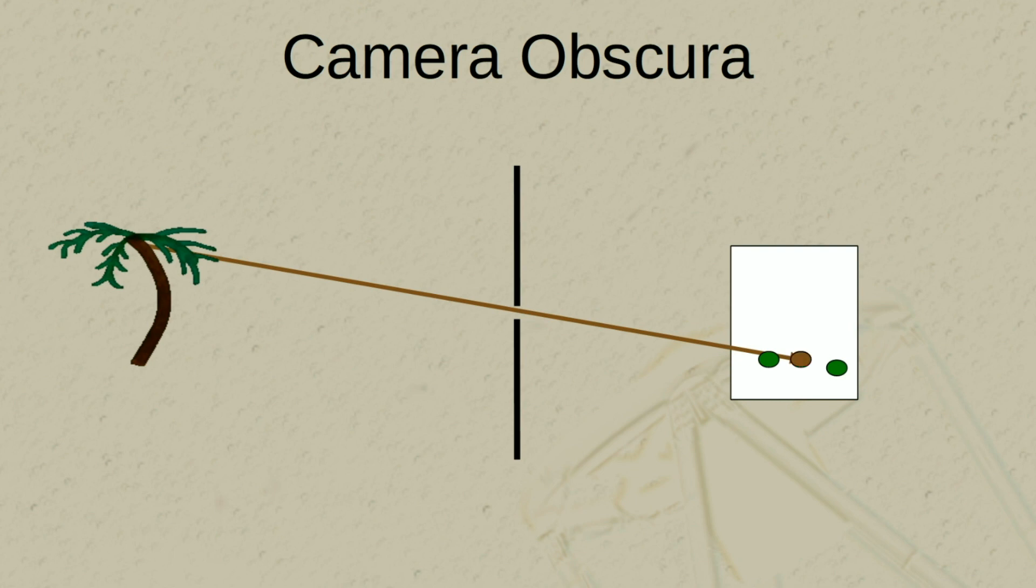We can continue this for a few more spots. This spot on the trunk will make it through and light up this part of the screen. Light from this part of the trunk, and we can continue considering all the points on the tree until we build up in our minds how the image of the tree forms.